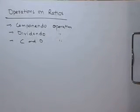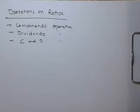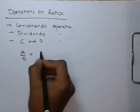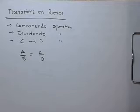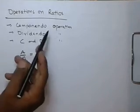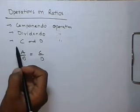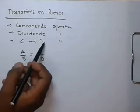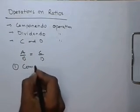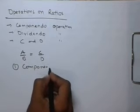In this video we will do some operations on the proportion a/b = c/d. There are three important rules that can be derived from this: componendo operation, dividendo operation, and the componendo and dividendo operation. First we will focus on the componendo operation.